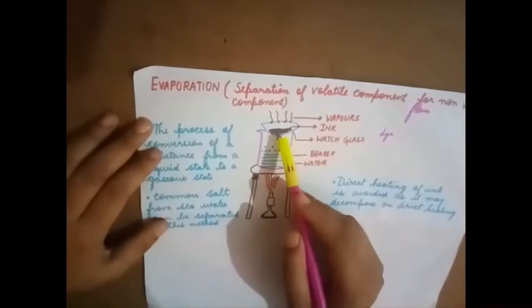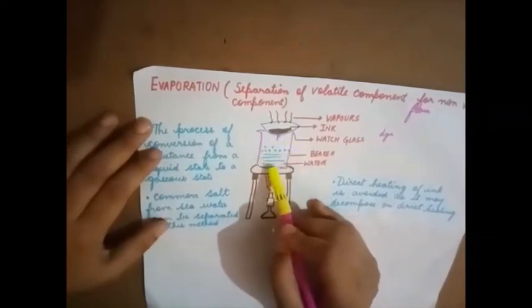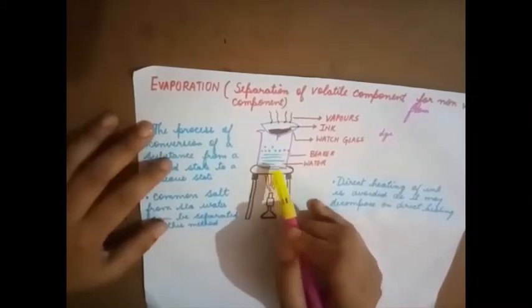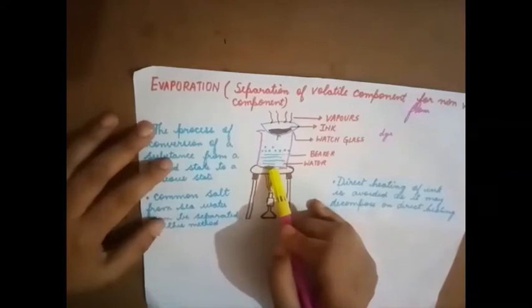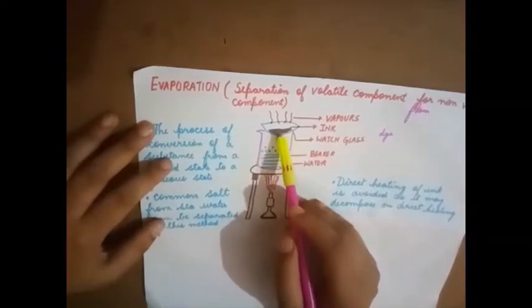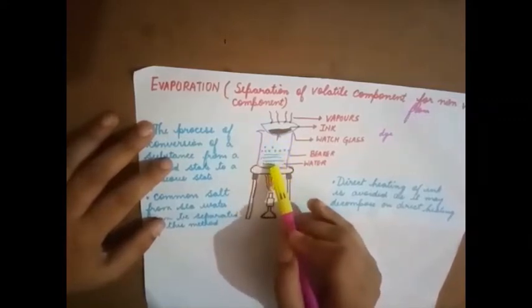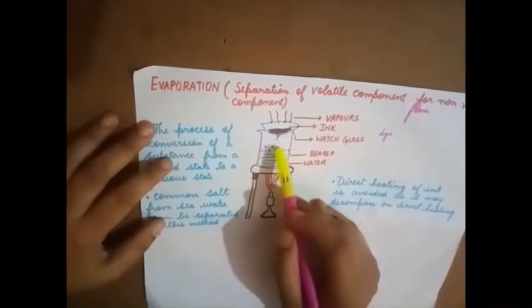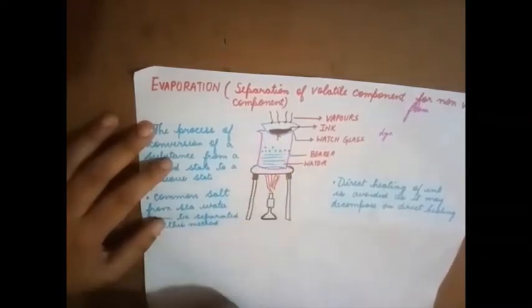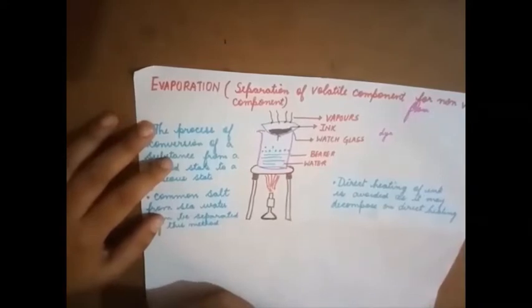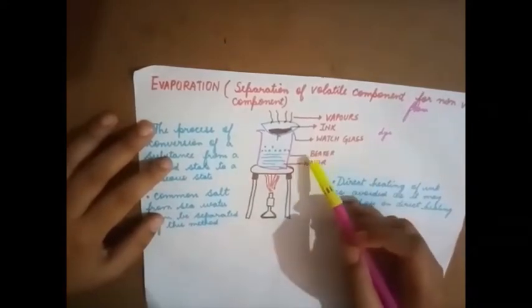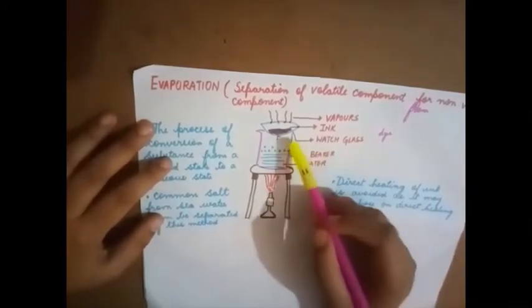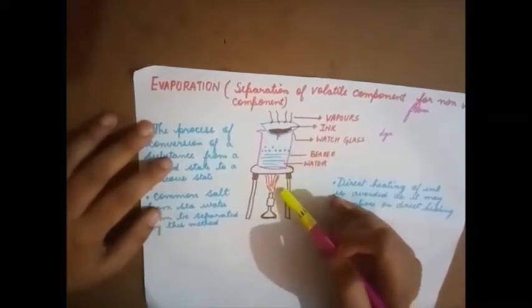We cannot directly heat the ink because the ink might get decomposed and we might not get the desired result. That's why we are not heating the ink directly. We are taking the beaker with water and then slowly supplying the heat. We are not directly heating it. The aim of this experiment is to separate the dye from the ink.